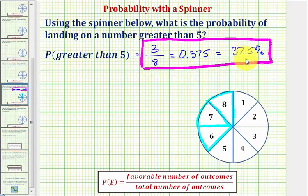And as a percentage, this tells us we expect to land on a number greater than five, 37.5 percent of our spins. I hope you found this helpful.